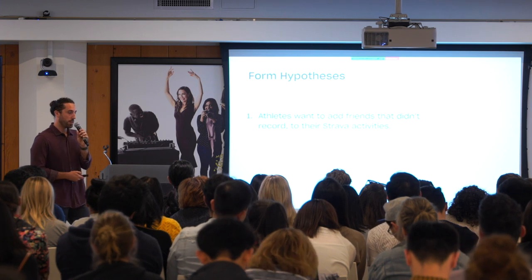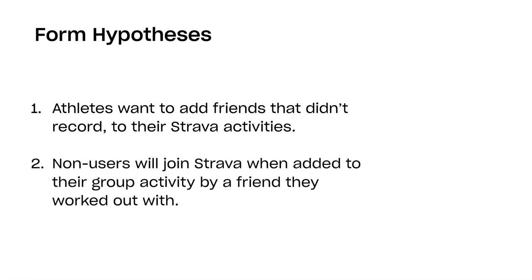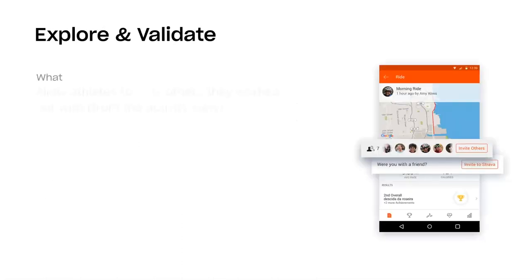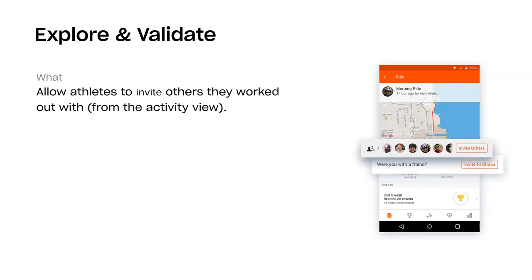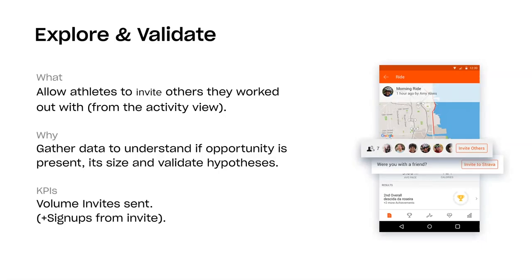We formed two hypotheses: first, that athletes actually want to add friends who didn't record to their Strava activities; and second, that non-users would be more likely to join Strava when added to an activity they did with a friend. To explore, we started with a simple cell test on the activity detail view on Android — chosen for resource reasons. We added a cell prompting you to invite someone you had worked out with. KPIs were volume of invites sent, laddering up to the North Star of signups.